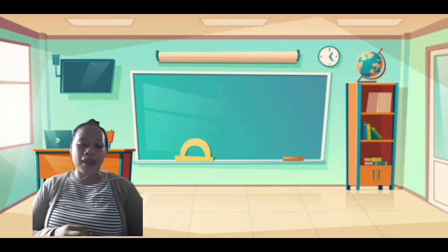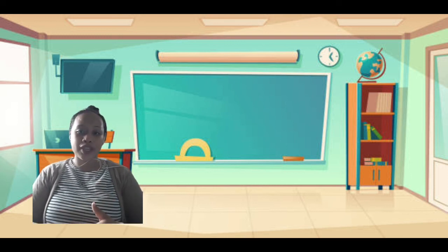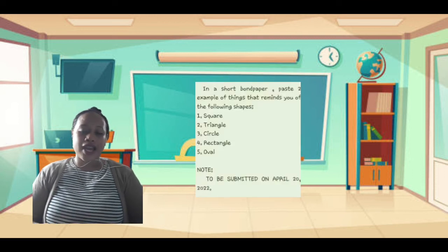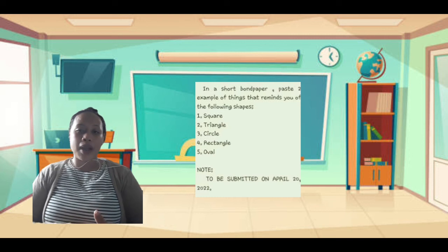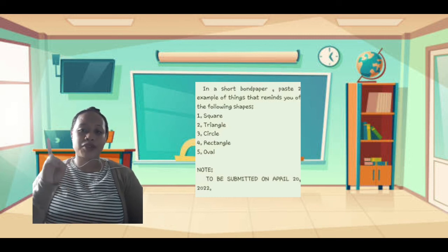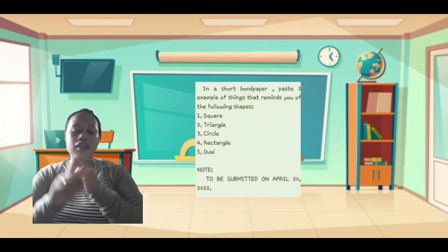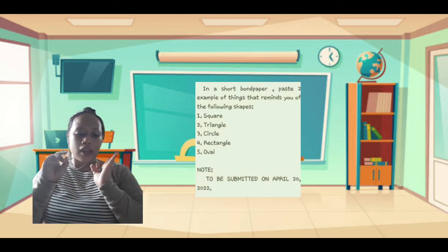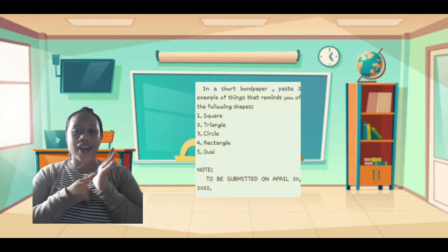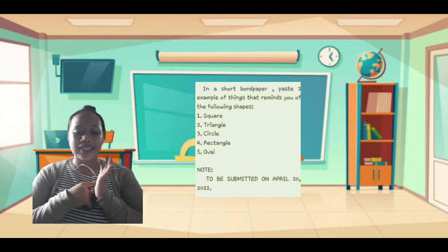By the way, you can pass it until tomorrow. In this portion, I am going to give your individual project. In a short bond paper, paste two examples of things that remind you of the following shapes: square, rectangle, circle, oval, and triangle. To be submitted on April 2020.